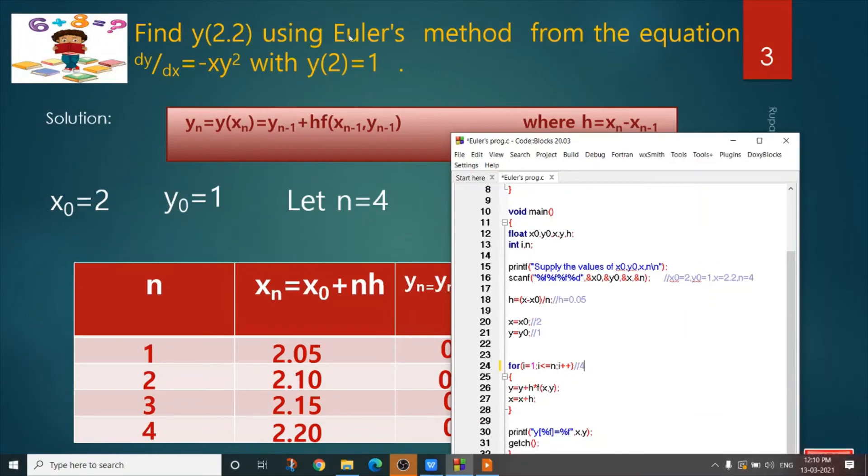From the formula of Euler's method see y equals to y plus h into f(x, y). y equals to y plus h into f(x, y) and what is next x? Next x is x plus h.